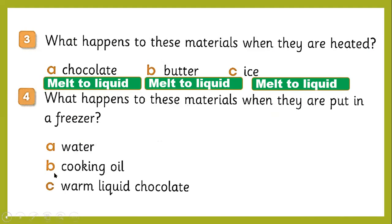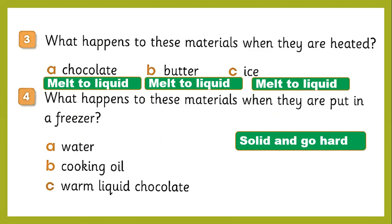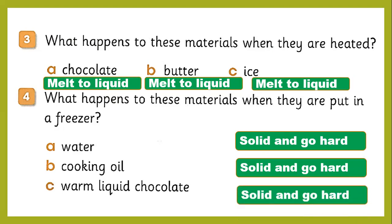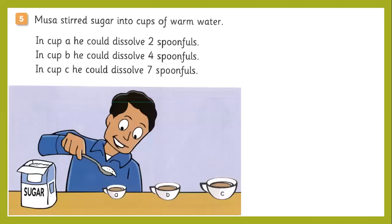What happens to these materials when you put them in the freezer? When you put water in the freezer, it changes from liquid to solid and goes hard. Cooking oil does the same — it goes solid and hard after freezing. Warm liquid chocolate, when put in the freezer, will also become solid.